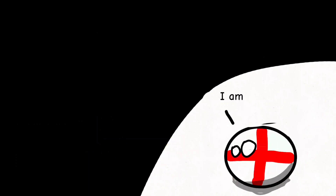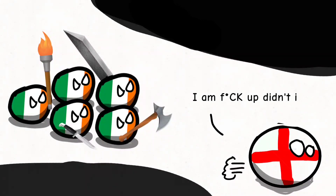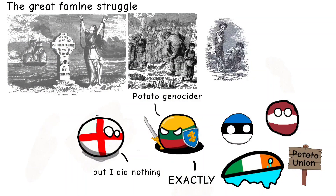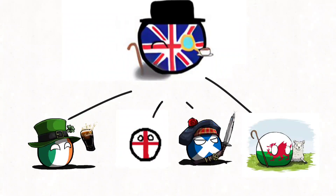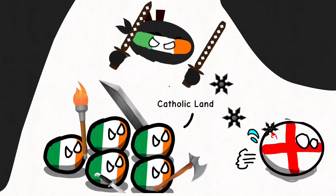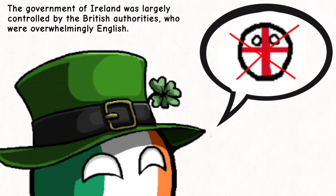Another key factor was the rise of Irish nationalism in the late 19th and early 20th centuries, especially after the Great Famine. At that time, the United Kingdom had already formed between four kingdoms, and Irish nationalists, who were mainly Catholic, sought greater autonomy and independence from English rule. They believed that Ireland should be ruled by its own people, rather than by a foreign power.